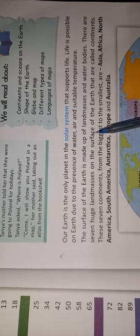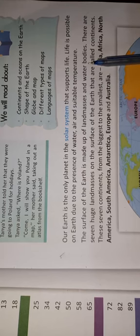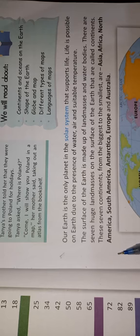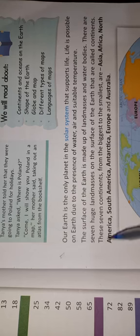The surface of the earth is made up of land masses and water bodies. हमारी earth जमीन और water से बनी है। There are seven large land masses on the surface of the earth that are called continents. तो जमीन के टुकड़े जो हैं, वो seven हैं और उन्हें continents कहते हैं।